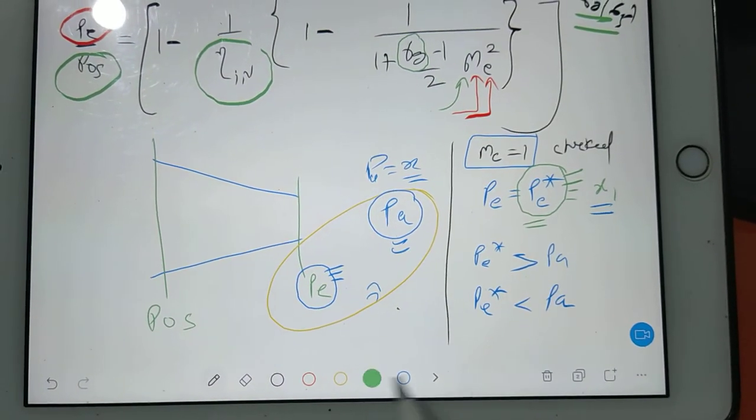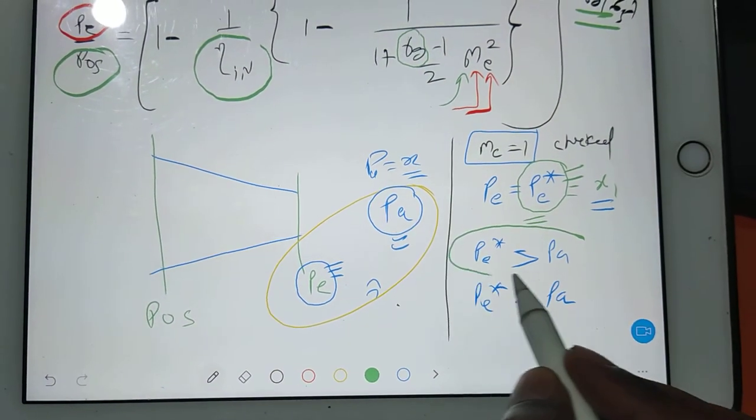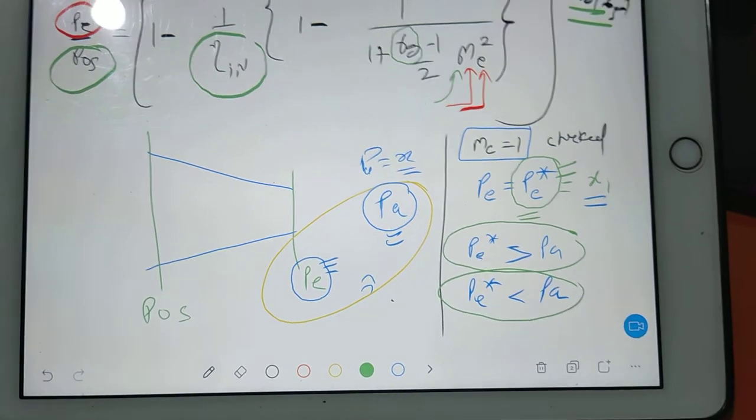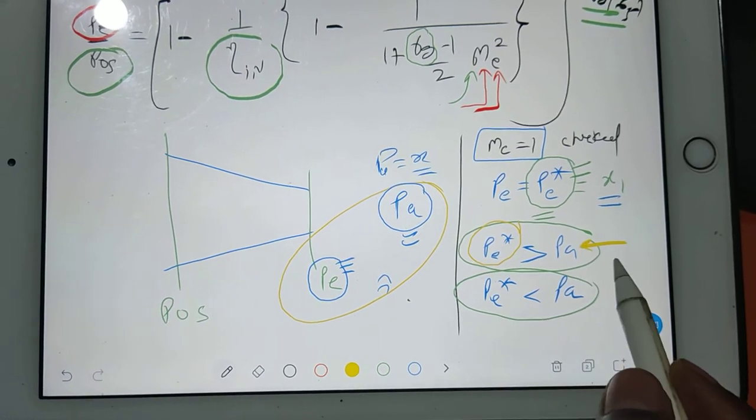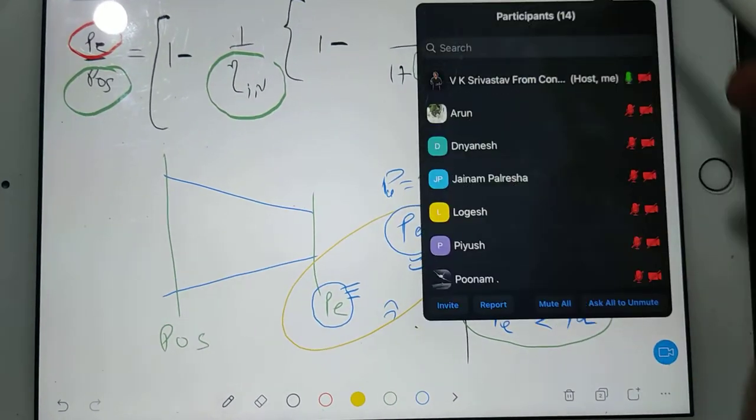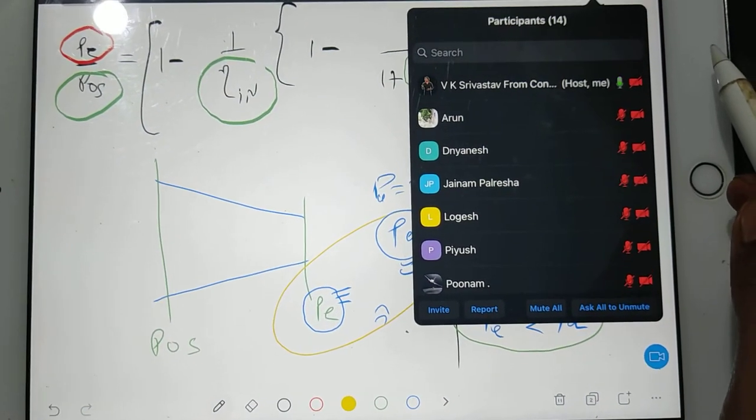So after finding out p star, after comparison, if you are getting that your p star is greater than pa, then this condition is known as... reply students.